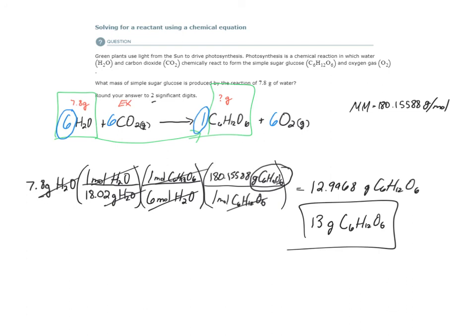How do we interpret this? If I have 7.8 grams of water to start, then I end up with 13 grams of glucose. All of the water is used up, the reaction stops, and this is what I have.